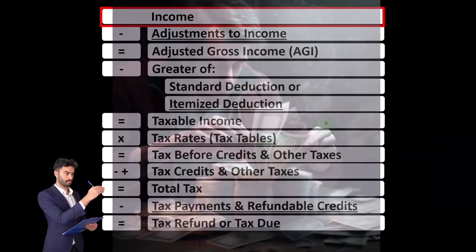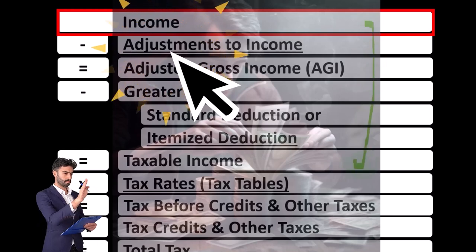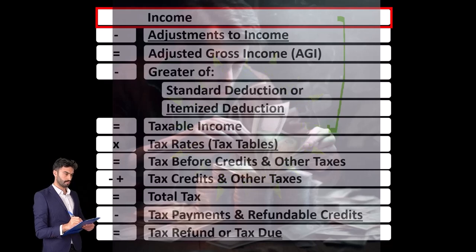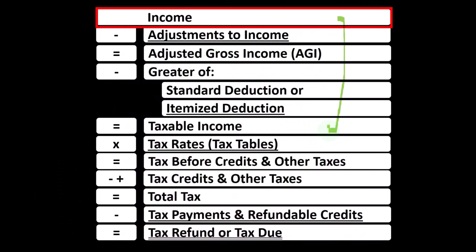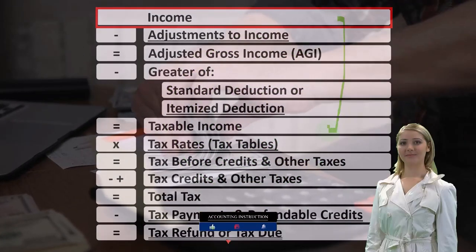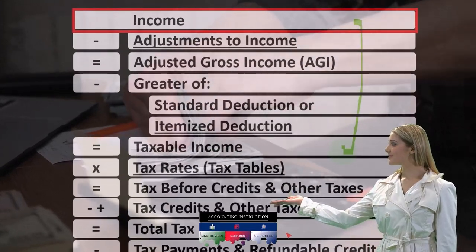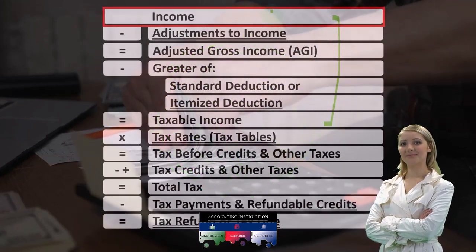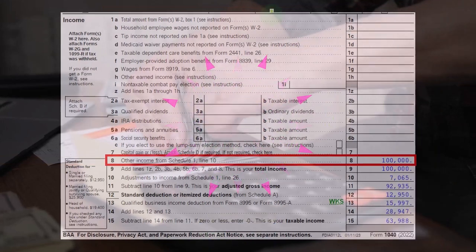Looking at the income tax formula, we're focused on line one income. The first half of the income tax formula is in essence an income statement — just a scaffolding with other forms and schedules flowing into these line items. The Schedule C is one of them, for business income, being in essence an income statement with business income minus business expenses. The net income then rolls into line one income of our income tax formula.